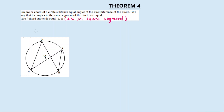Before we look at the theorem, refer back to theorem number 2 where I've explained the term 'subtend'. Please go watch that if you haven't done so. In theorem number 4, chord AB subtends equal angles at D and C — D and C are equal. The converse is also true: chord DC subtends angles A and B, and those angles are equal.